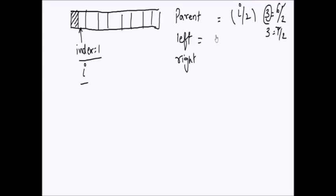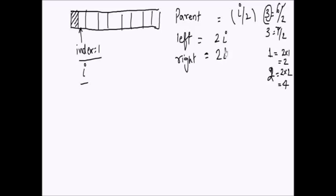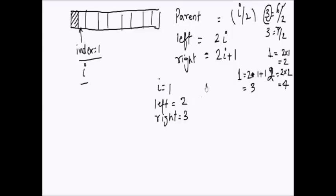To go to the left child, it is 2i. So if the element is at index 1, its left child is at 2×1 = 2. If parent is at 2, the left child is at 4. The right child is 2i plus 1. So if parent is at 1, right child is at 3. For i equals 2, left child is 4, right child is 5.